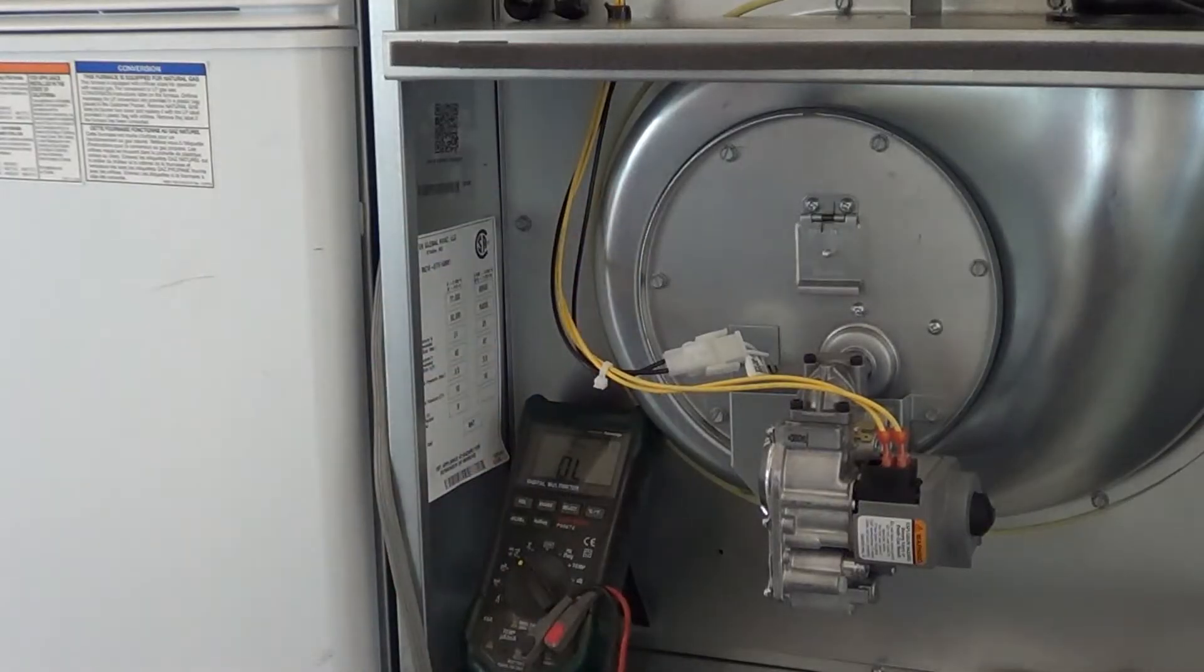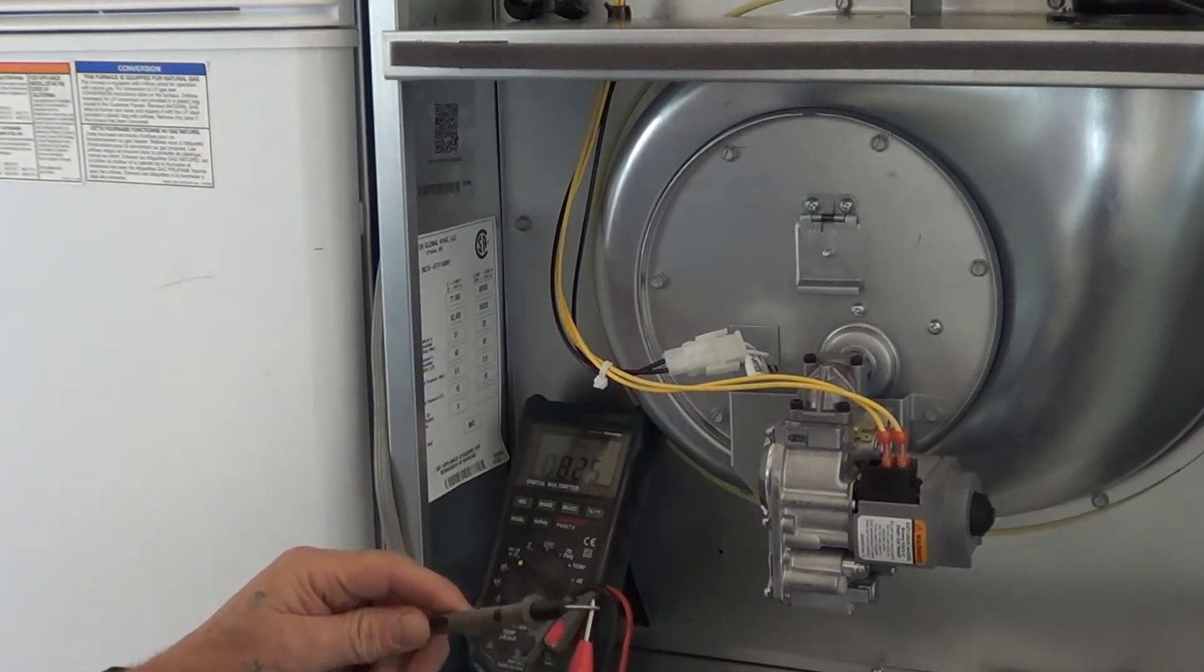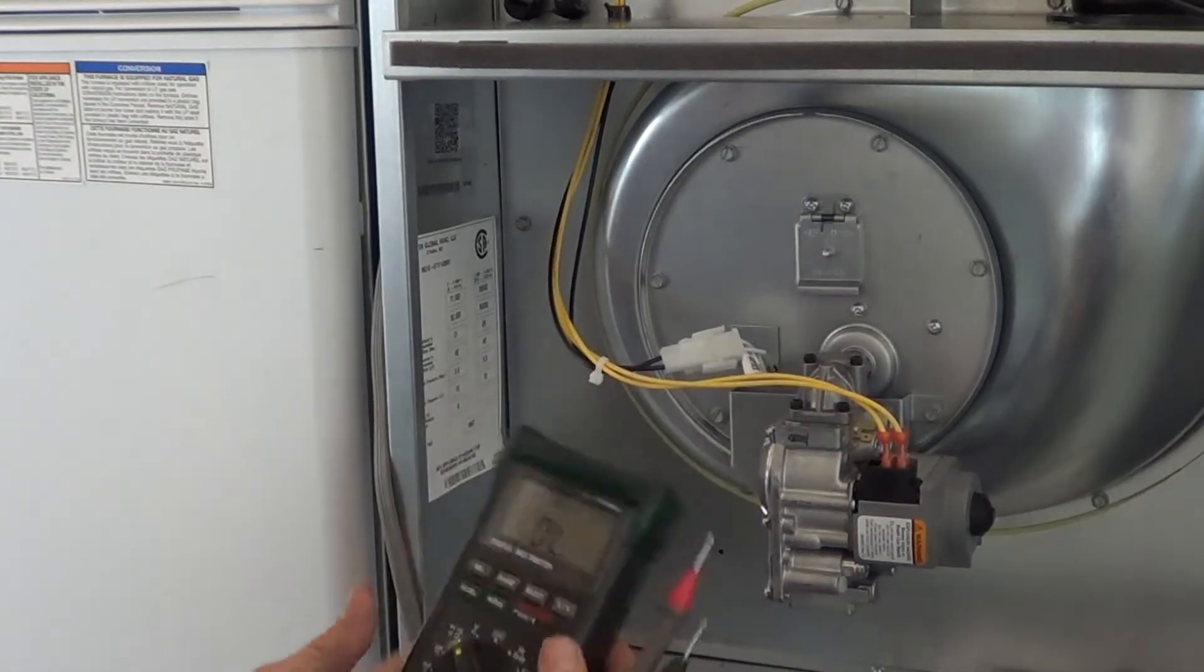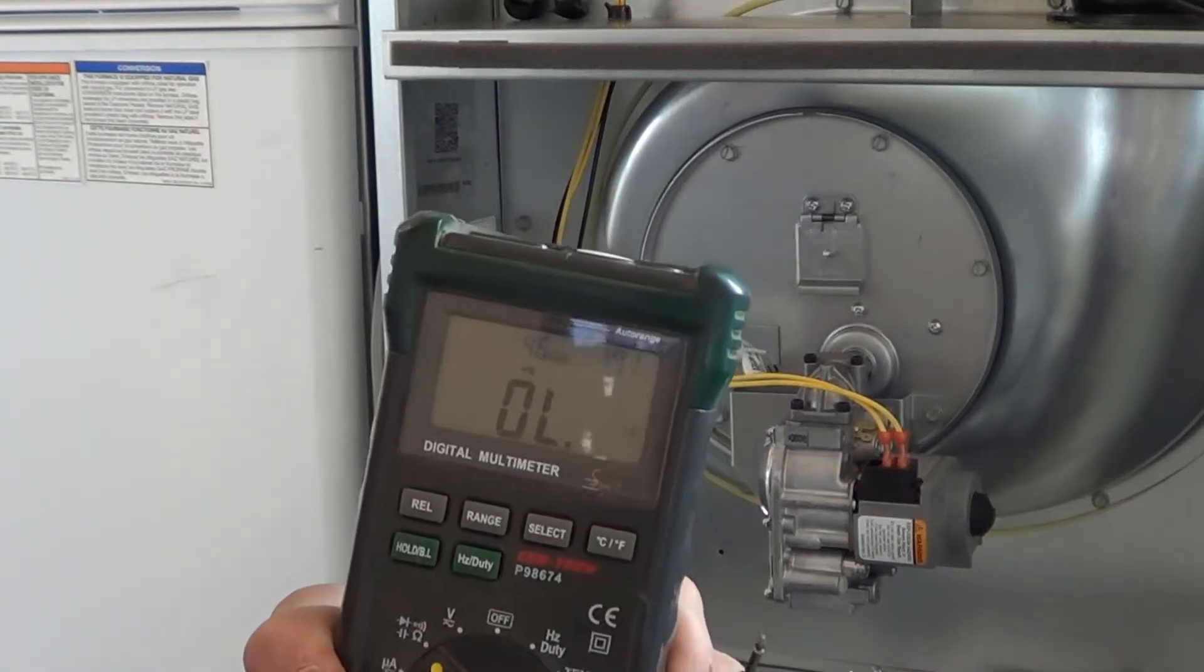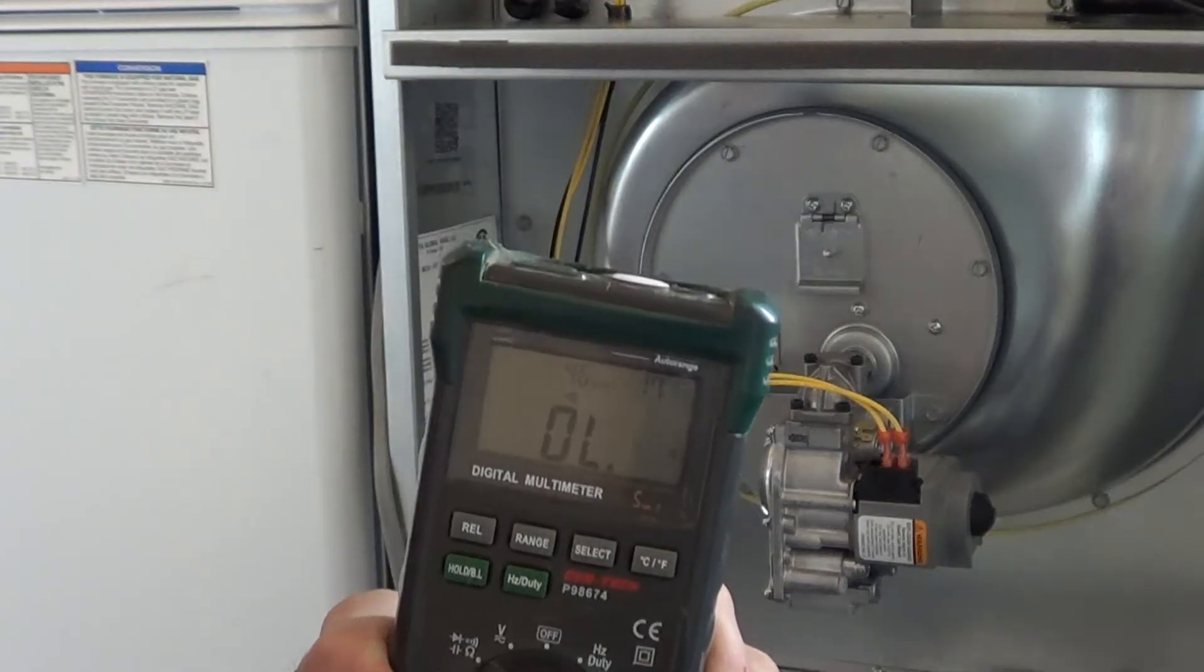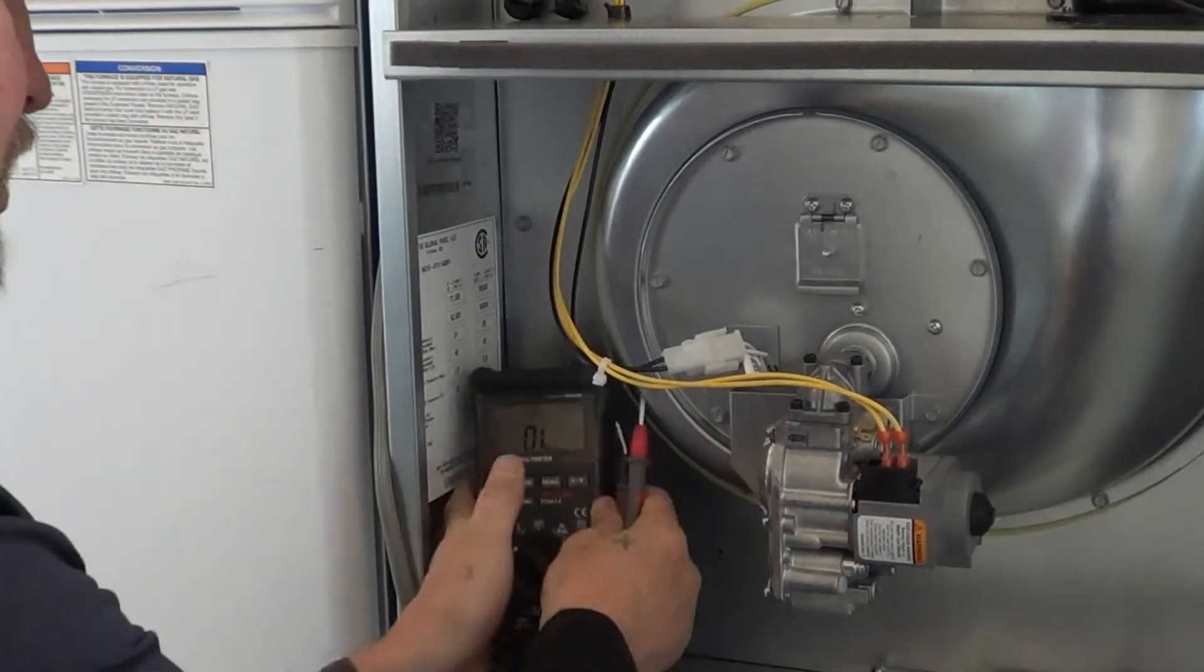To check for continuity, you get a tester that tests for continuity. I like to make sure mine has that little beeper on there. You definitely need a continuity tester to test the igniter. It's going to show some resistance there, and we're going to set this over here.